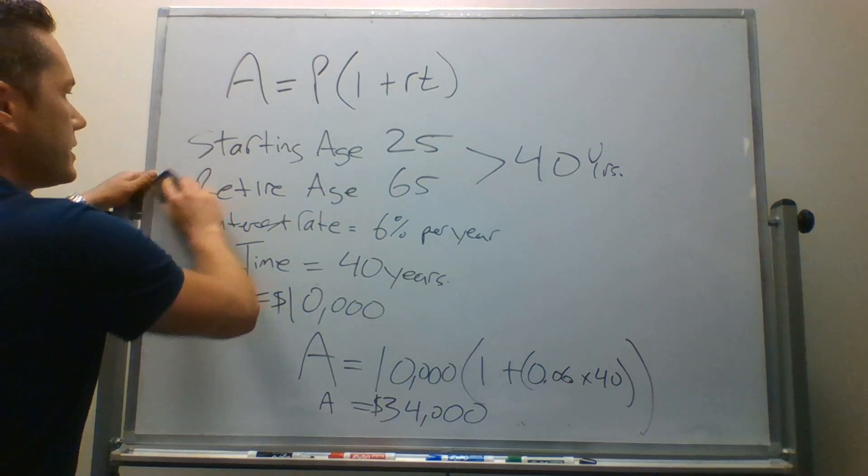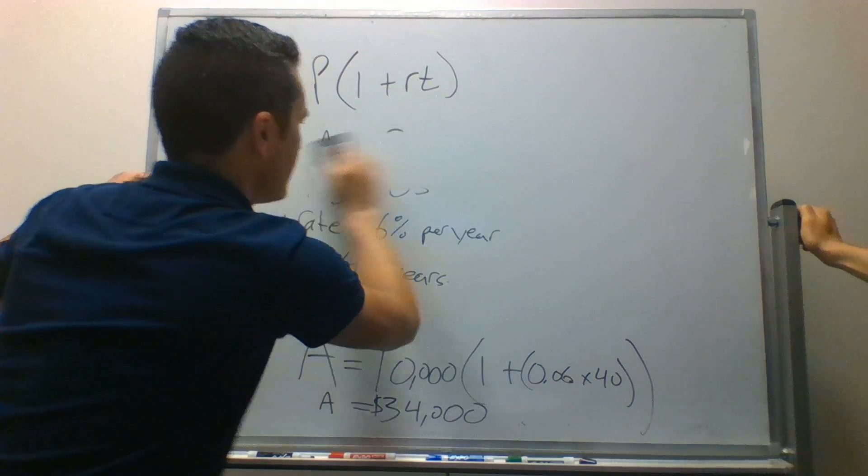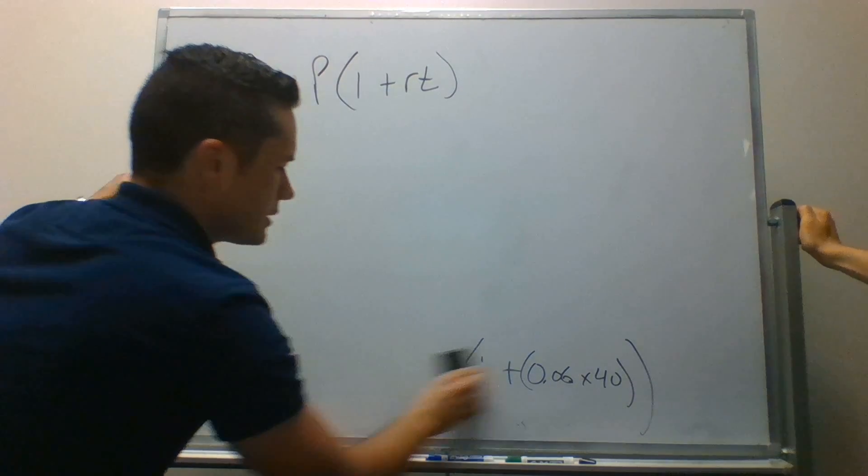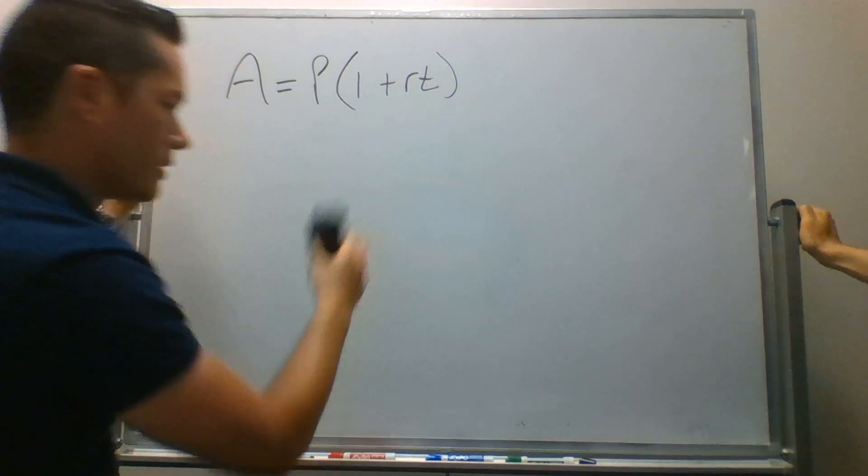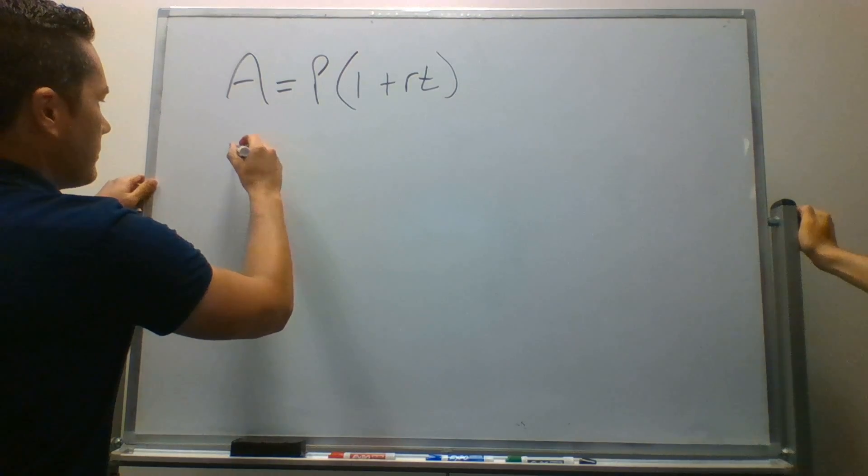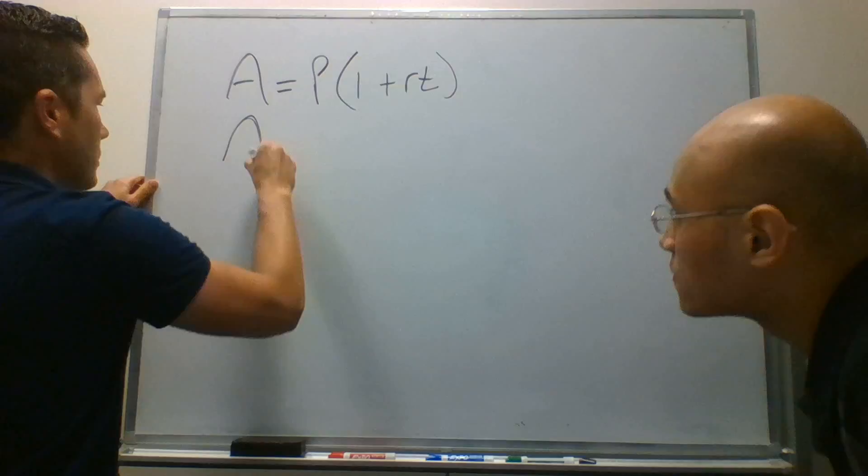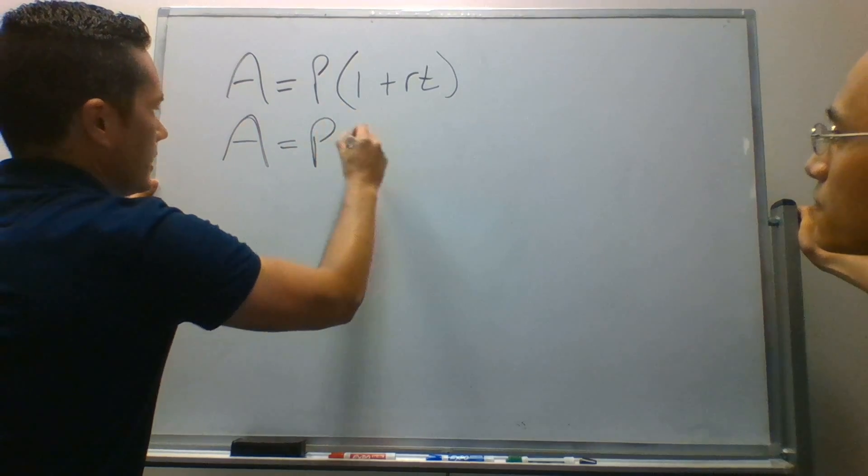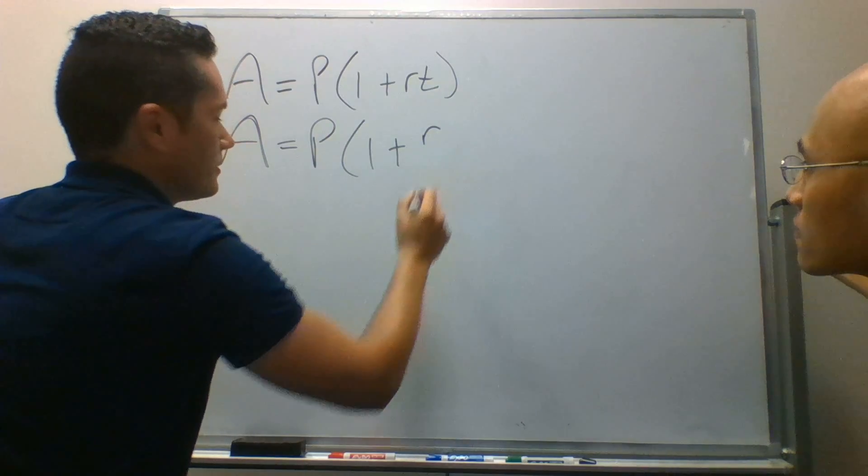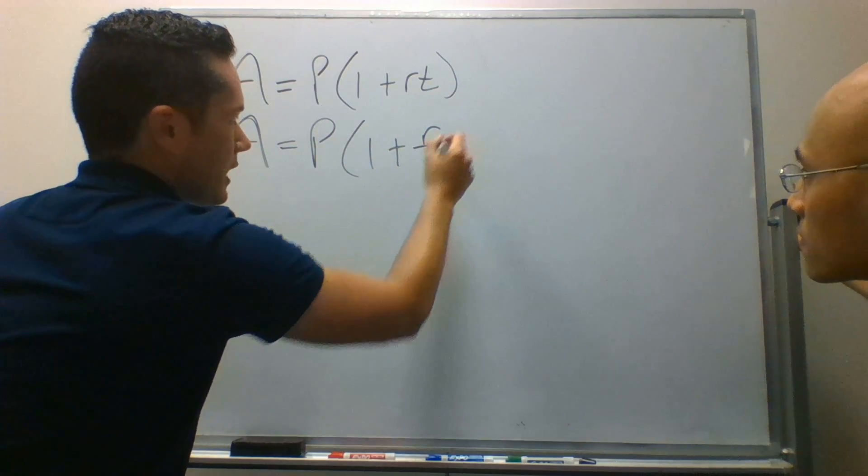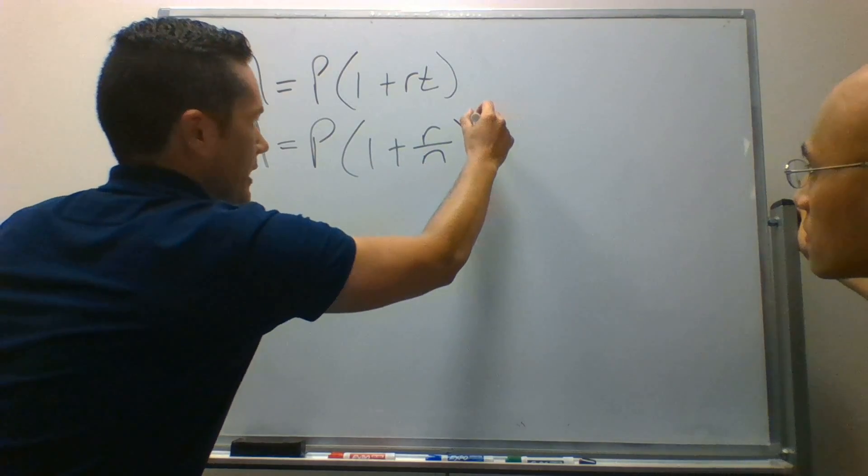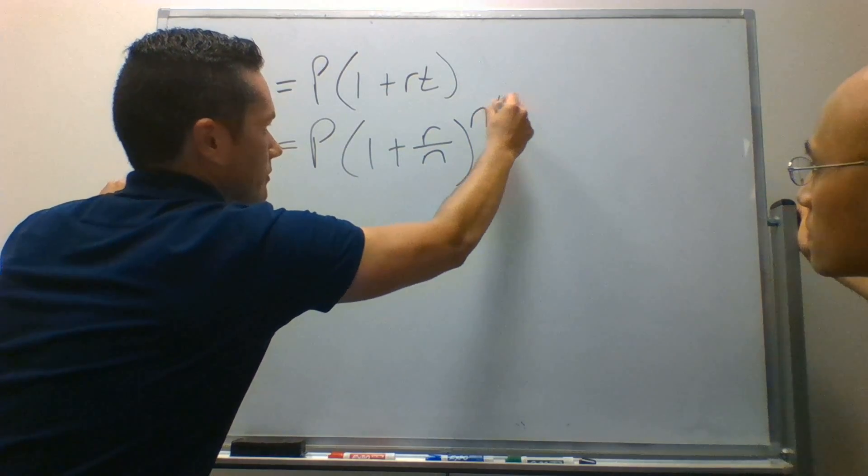Okay, so in terms of compound interest, let me remove this. I'm just going to write the equation underneath the simple interest so we can compare it. You'll notice that it's mostly similar, except we're taking the rate of interest, dividing it by this new variable n, and raising that to the power of nt.